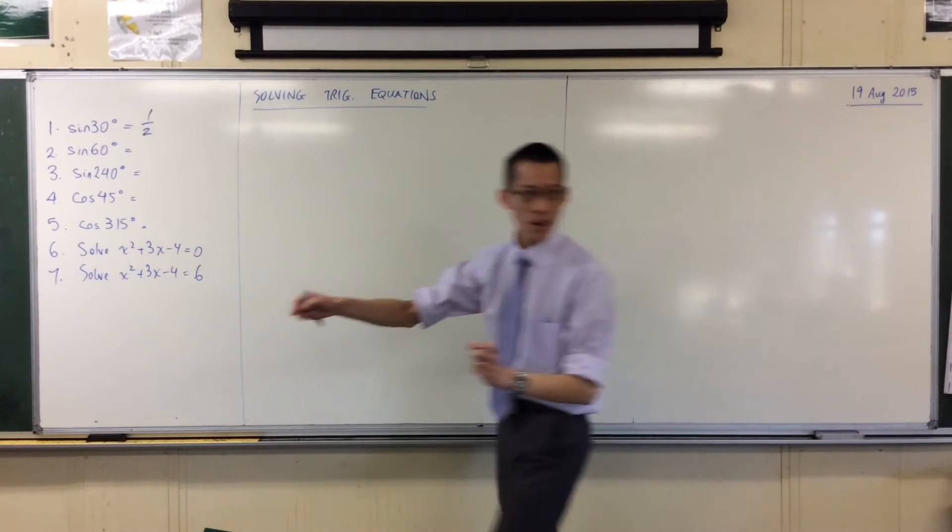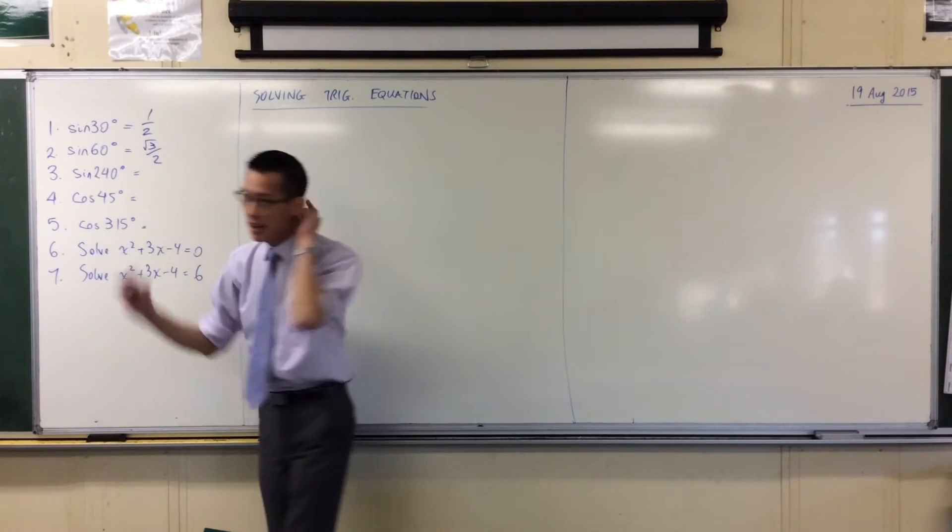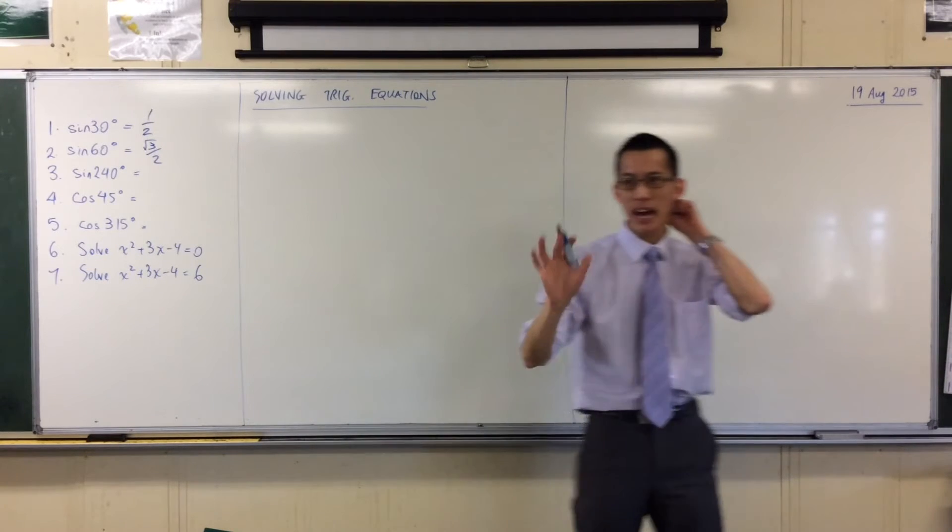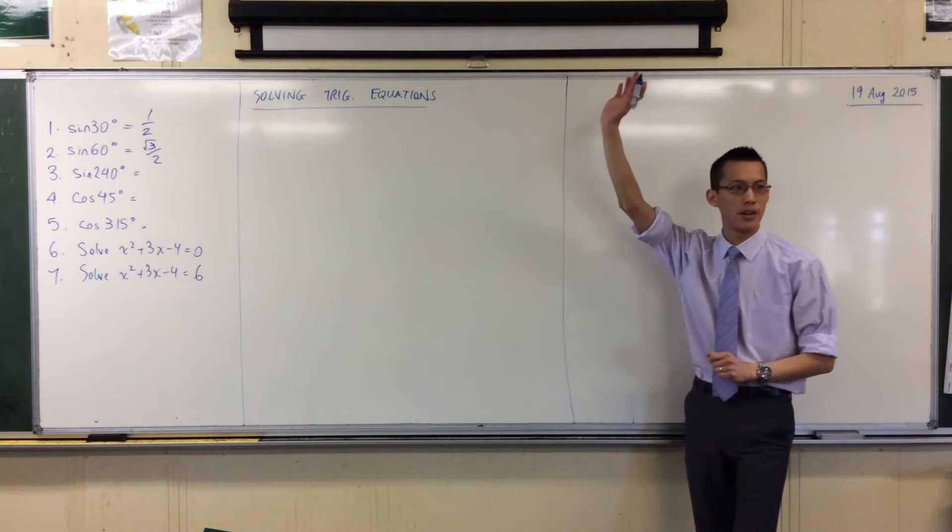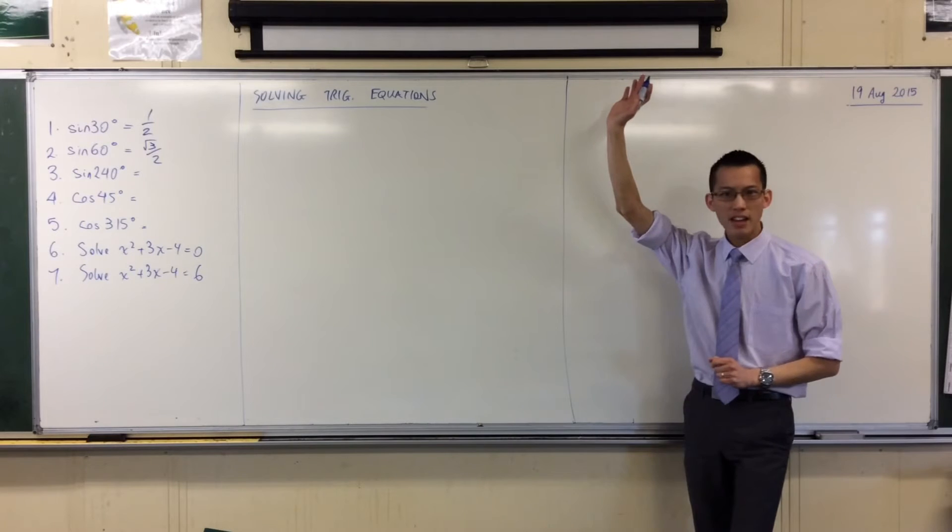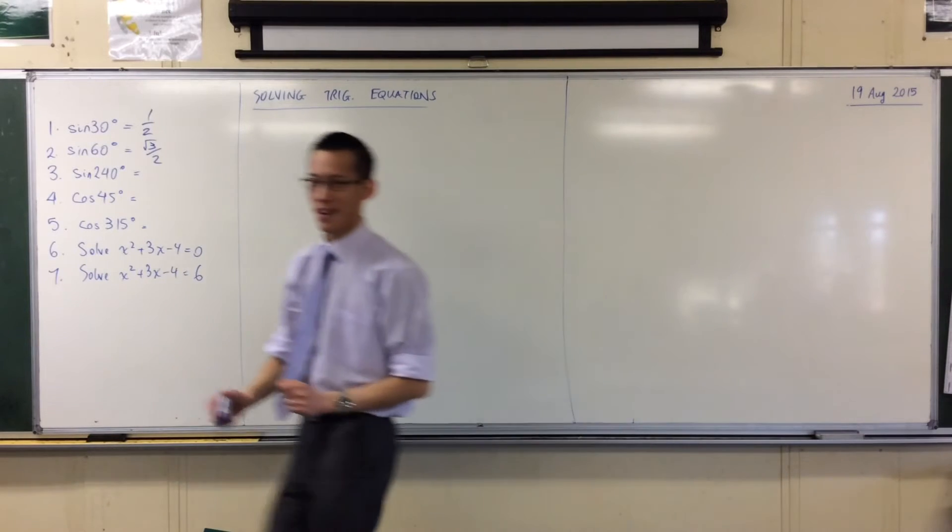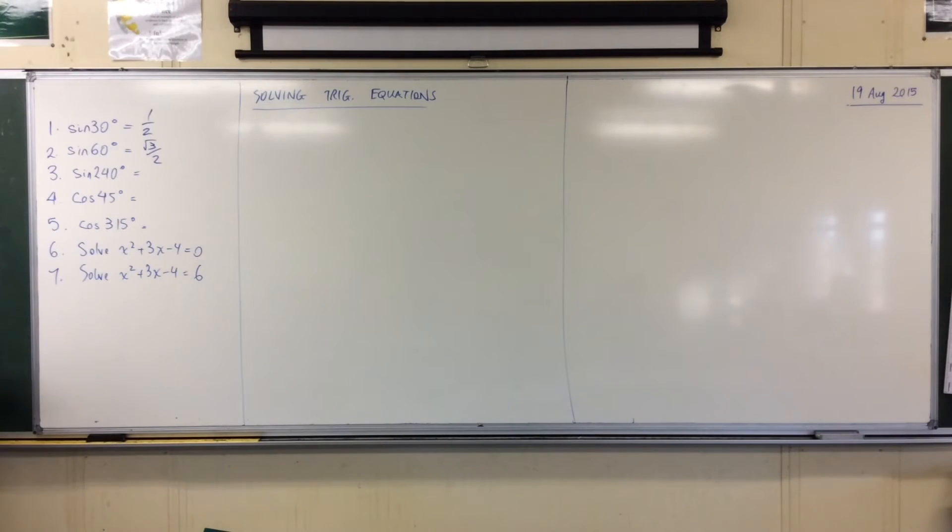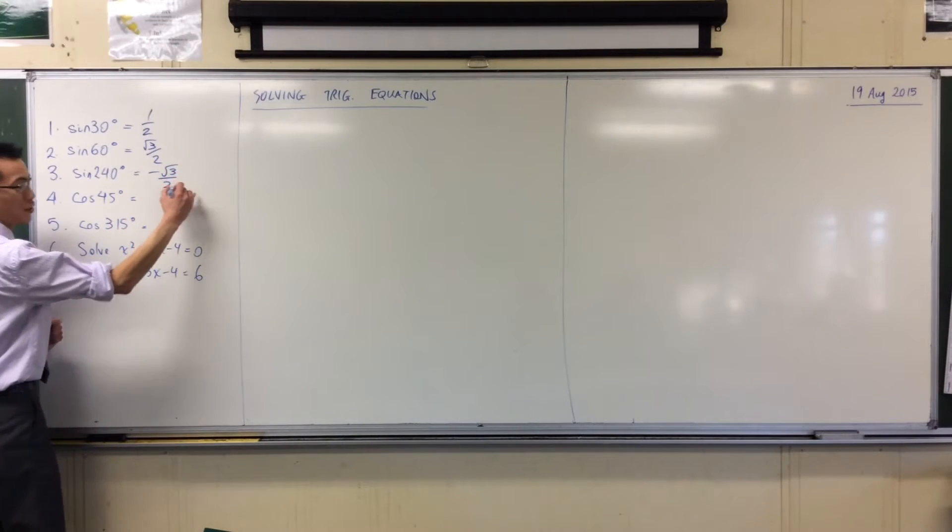Root 3 on 2. Fantastic. Now, sine 240. Don't shout out yet, but who's got sine 240? Hands up. Okay, a decent number of you. So Kyla, what did you get for it? Negative root 3 on 2.